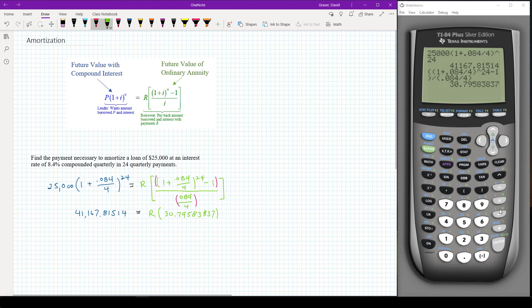So in order to get the R I'm going to divide both sides by 30.79583837.